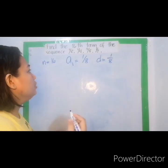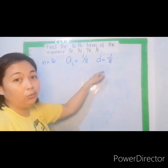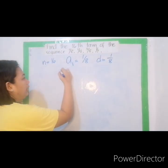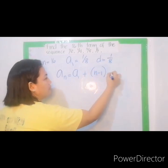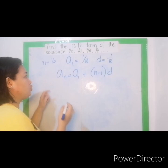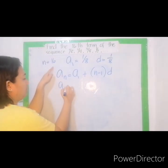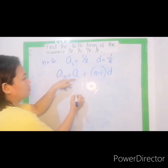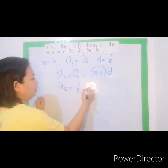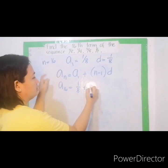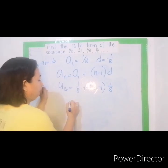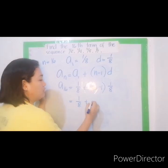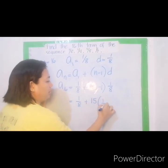Going back, so we already have n, a sub 1, and d. We can now use the general formula: a sub n equals a sub 1 plus n minus 1 times d. So all we have to do is just substitute. This is a sub 16 equals a sub 1 is 1/8 plus n is 16 minus 1 times d is 1/8, which equals 1/8 plus 16 minus 1 is 15 times 1 over 8.